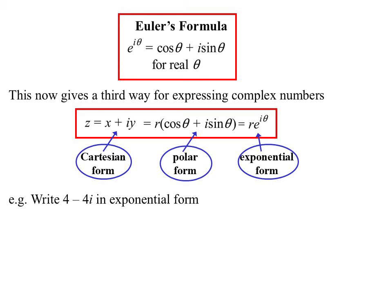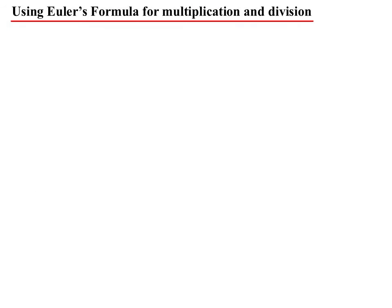So let's write something in exponential form then. Four minus four i, we could rewrite in mod arg form: four root two cis minus pi on four. Well that now means I could write it this way: four root two e to the power of minus i pi on four. But now this helps us explain why we add the arguments when we multiply.